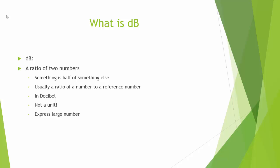So what is dB? dB is a ratio of two numbers — usually a very large number to a reference number, or a very small number to a reference number. It does not have a unit. It is very important to remember that dB does not have a specific unit; it's just a ratio of big numbers or small numbers, and it's always in decibels.